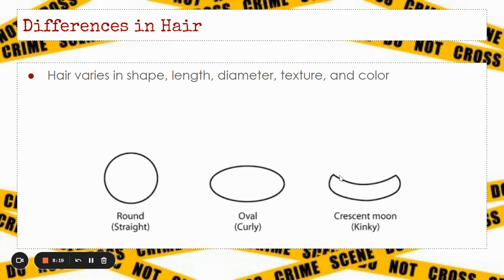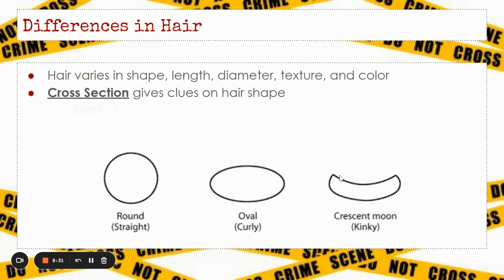Hair can also vary in shape, length, diameter, texture, and color. A cross-section of a hair can give clues as to what type of hair shape that person has. If that cross-section is round, that would indicate the person has straight hair. A more oval shape indicates curly or wavy hair. A crescent shape indicates very tight, small curls, which we would call kinky.